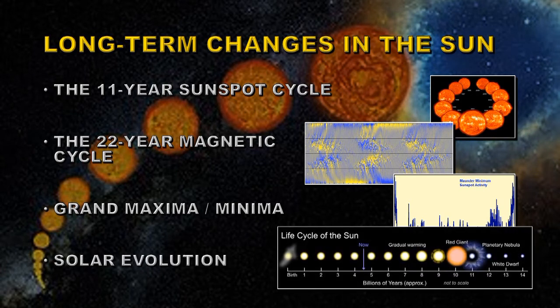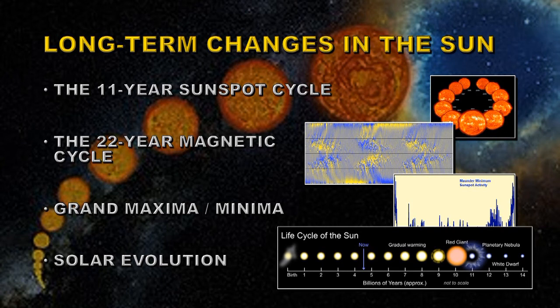The very long-term effect is solar evolution. Over the last billion years the Sun has grown about 30% in intensity and will continue to get hotter. The Earth will probably become uninhabitable for most life forms in about 1 billion years' time, so we'd better get off this planet. In about 7 billion years the Sun will form a red giant, which will certainly encompass the orbit of Venus and may even encompass the orbit of Earth. Eventually it will form a planetary nebula and a white dwarf, which will persist for billions of years more.